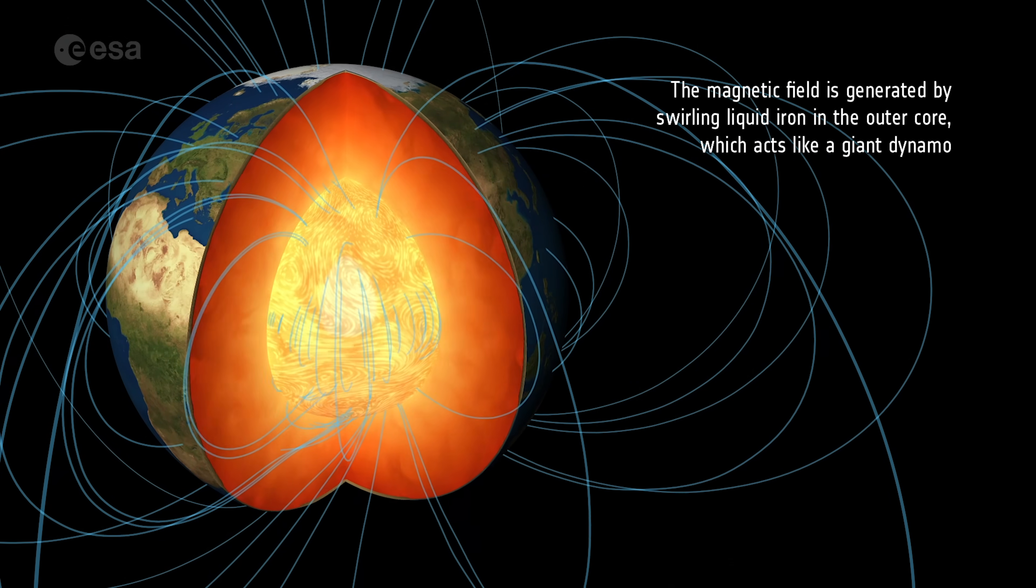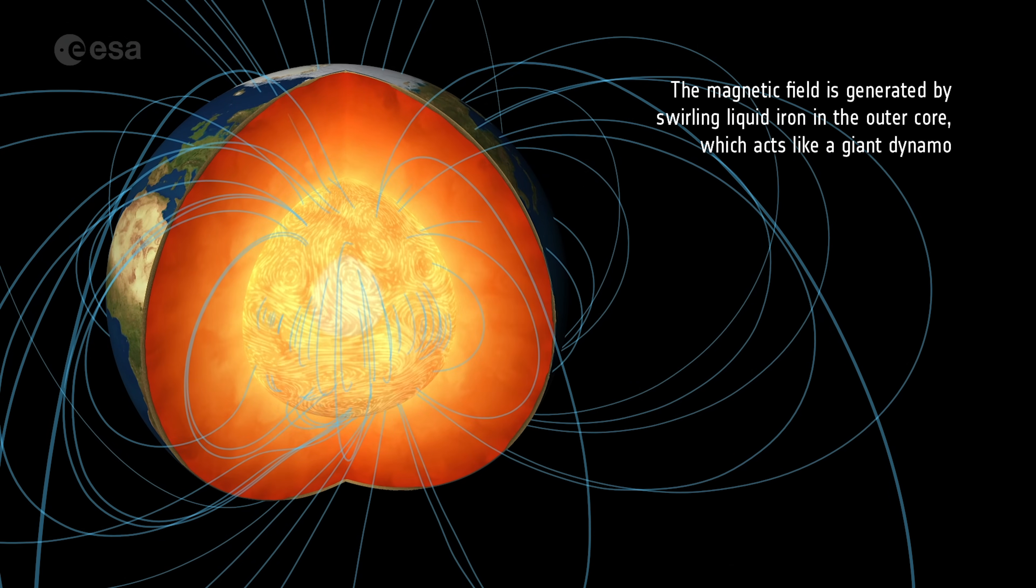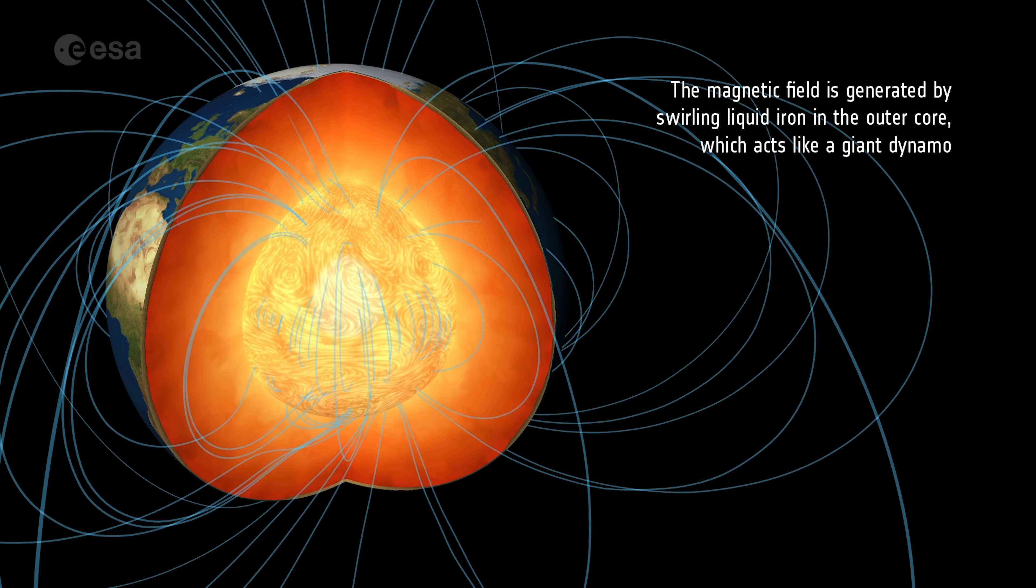The magnetic field is generated by swirling liquid iron in the outer core, which acts like a giant dynamo.